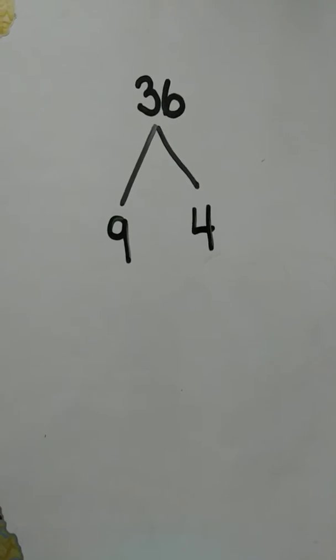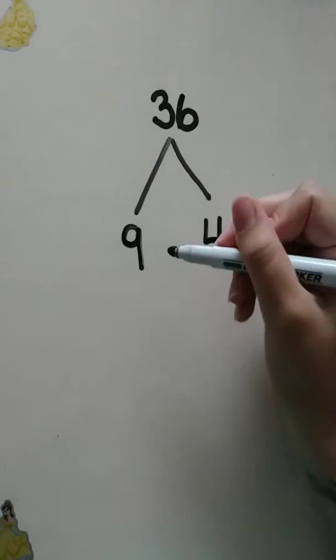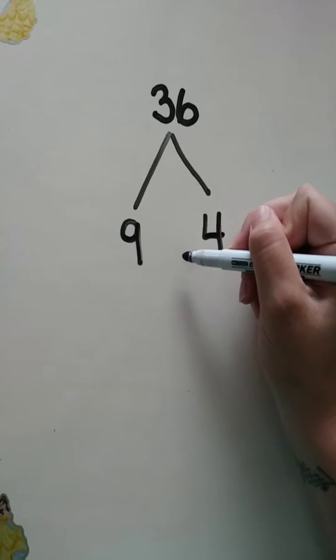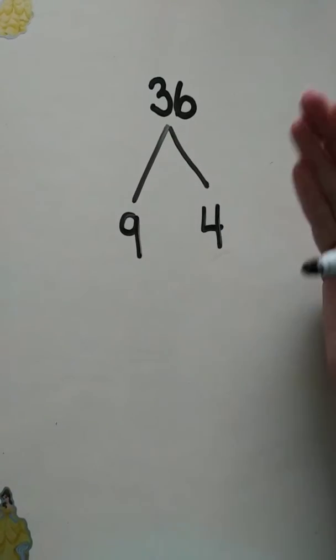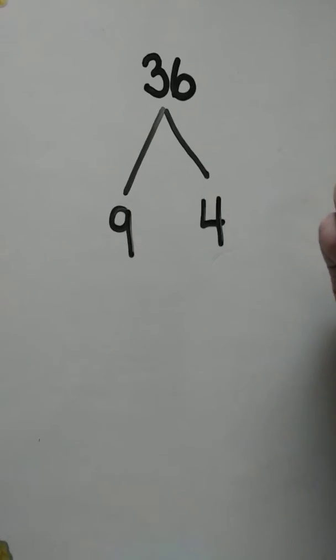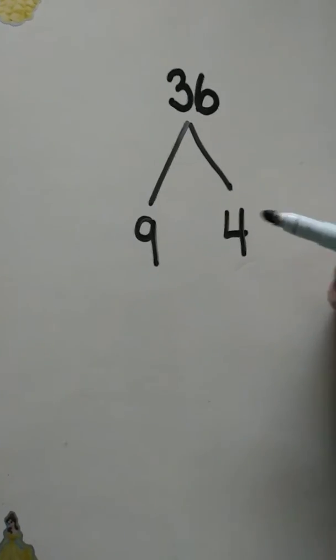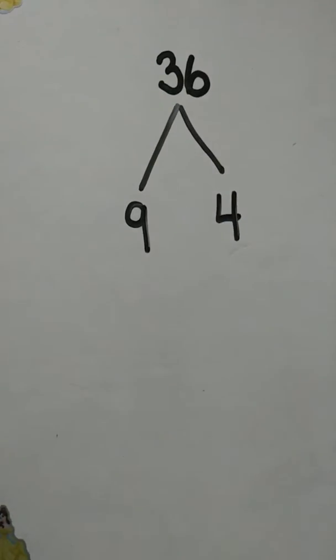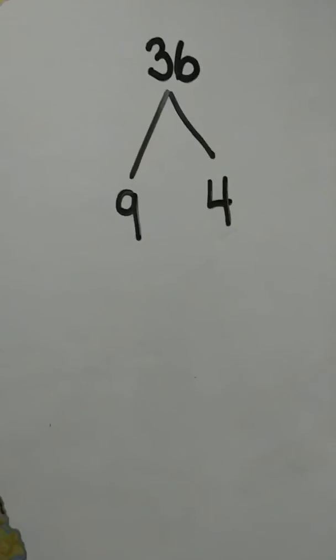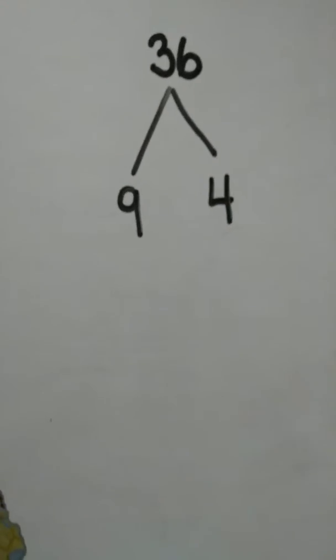So, depending on your teacher, they might ask you to put the multiplication symbol in there to show that you are multiplying, because it is a factor tree, and factors have to do with multiplying. Sometimes I put it in, sometimes I don't. To be honest, it doesn't really matter. Just be aware of what your teacher wants.